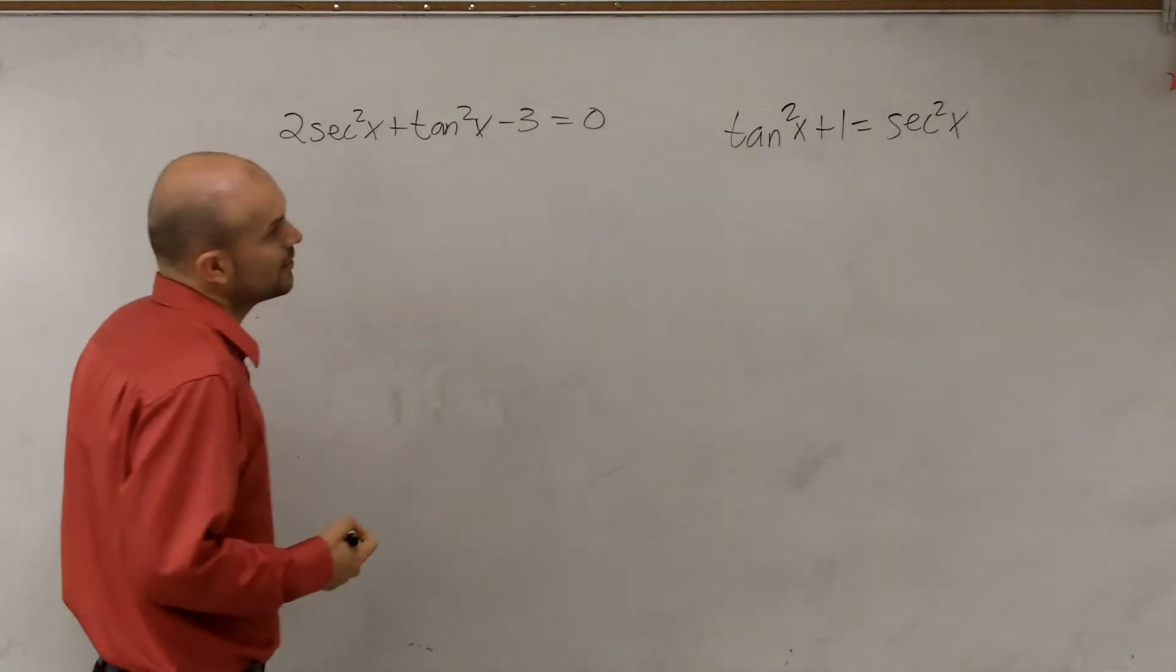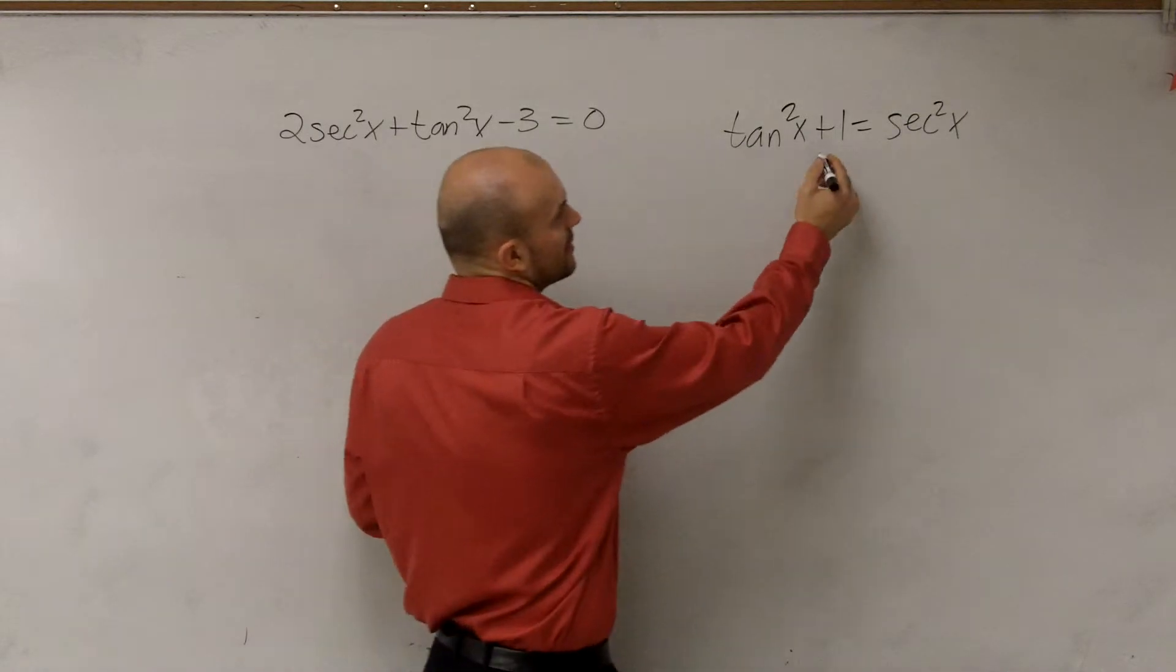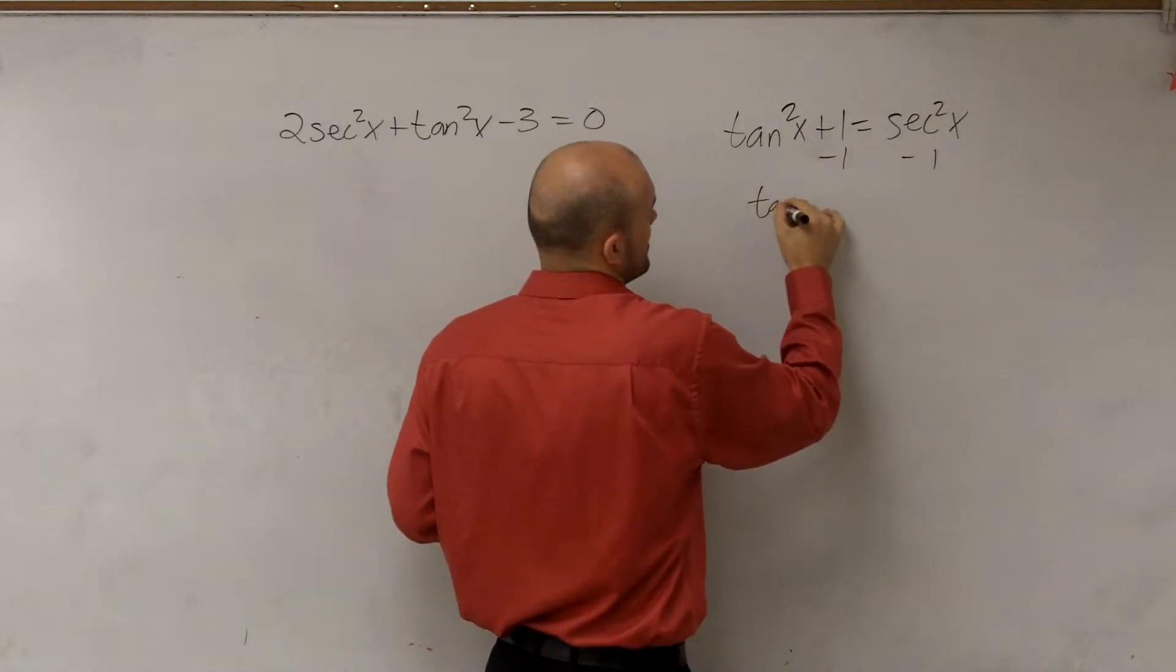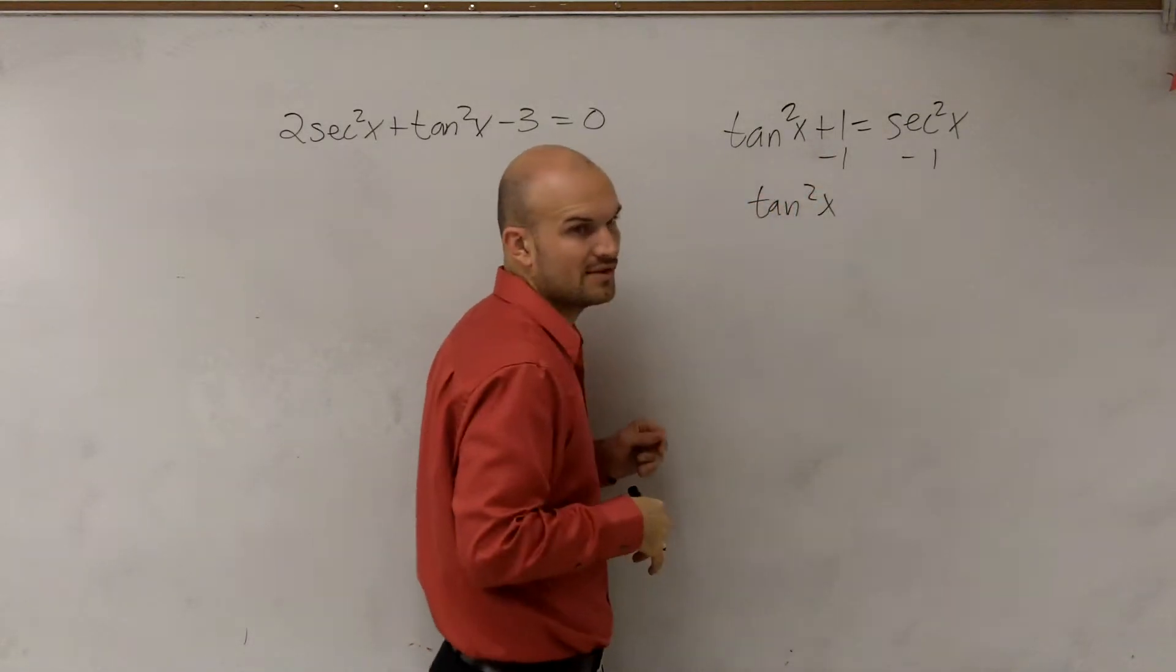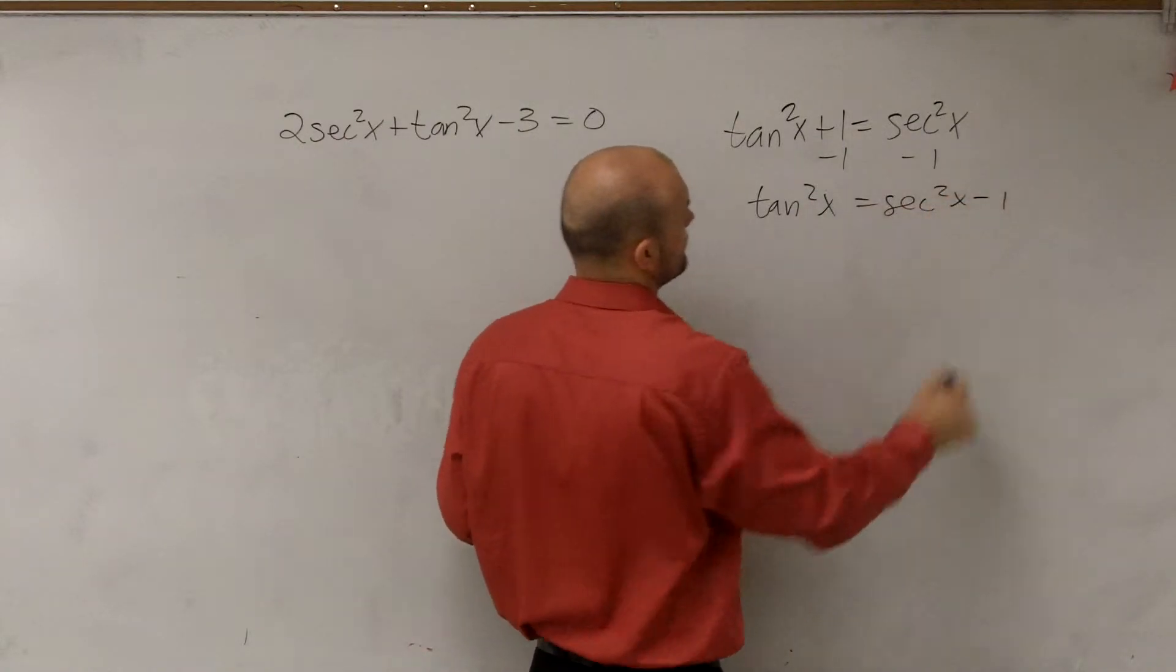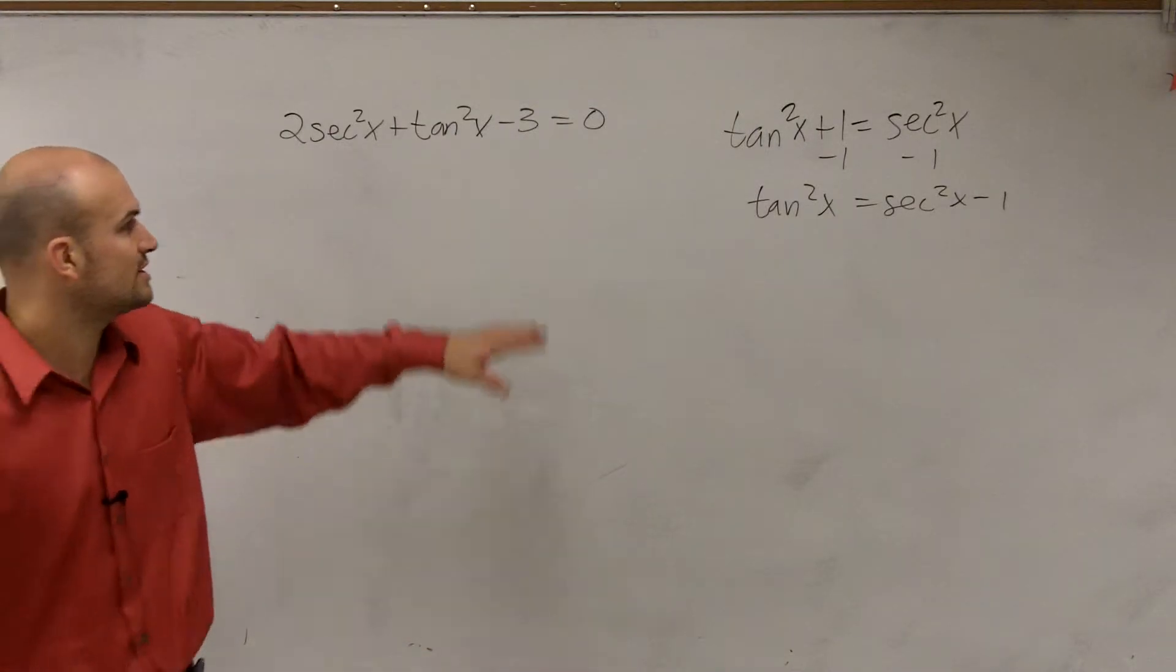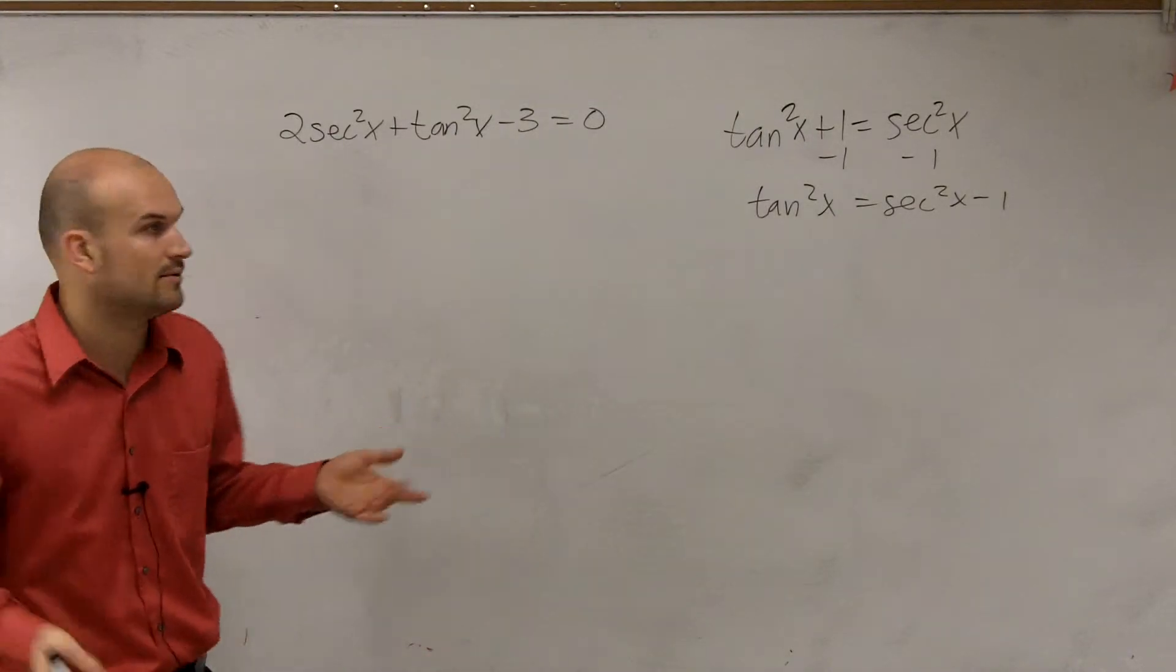Well, what I'm going to do is convert my tangent to secant. I don't know, that's just what I want to do because I'd rather solve for my tangent rather than solving for a secant. So tangent squared of x equals secant squared of x minus 1. You could convert these all to secants though, if you'd like to, and solve it that way.